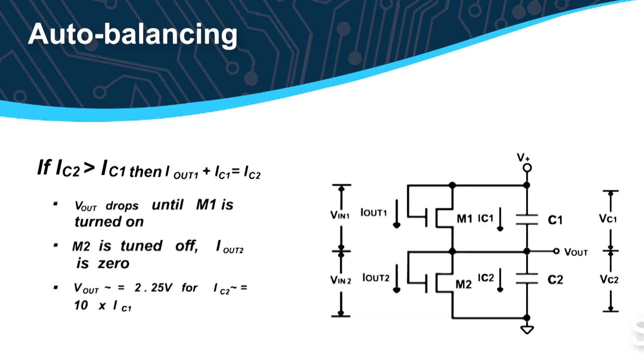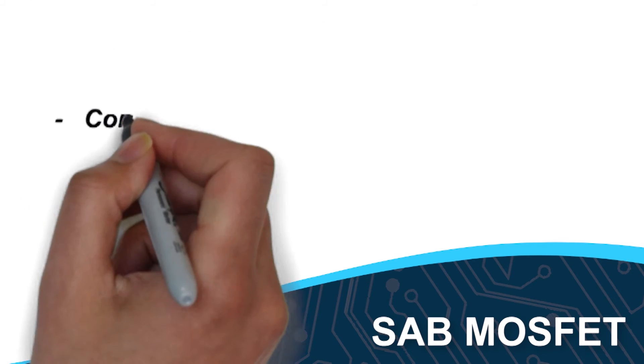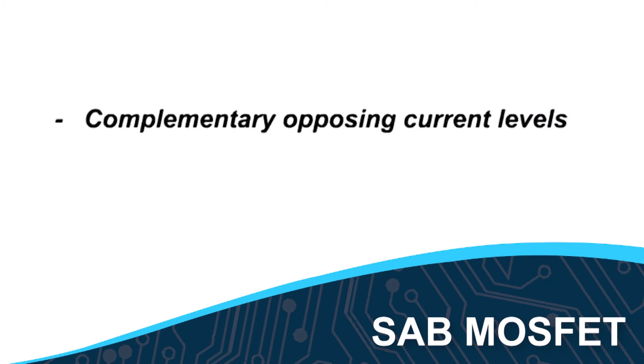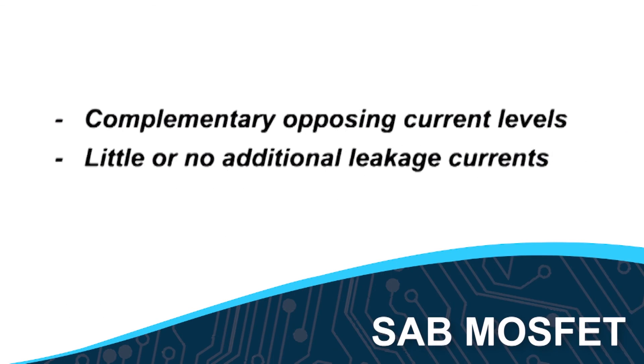SAB MOSFETs connected across these supercapacitors exhibit complementary opposing current levels, resulting in little or no additional leakage currents other than from the supercapacitors themselves.